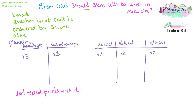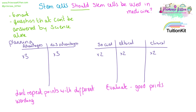Don't repeat points with different wordings. Don't put something as an advantage and then reword it as a disadvantage — you're saying the same thing twice and you won't get the marks. If the question has the command word "evaluate," you will need a good point, a bad point, you will need to give your opinion and then justify your opinion — for example, "I think that stem cells should be used in medicine because..." If you do not justify your answer, you will not be able to access the higher level of marks.